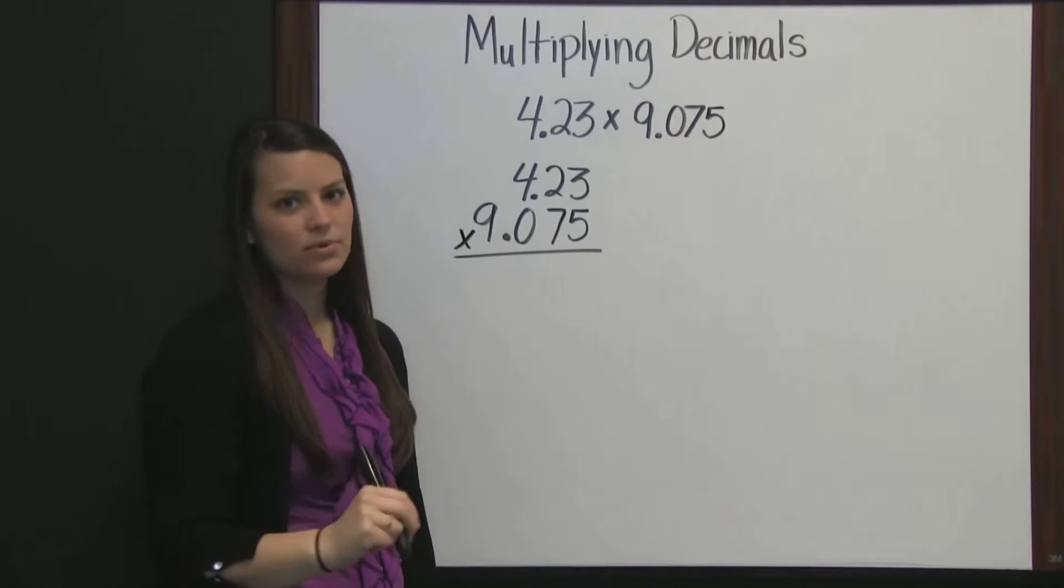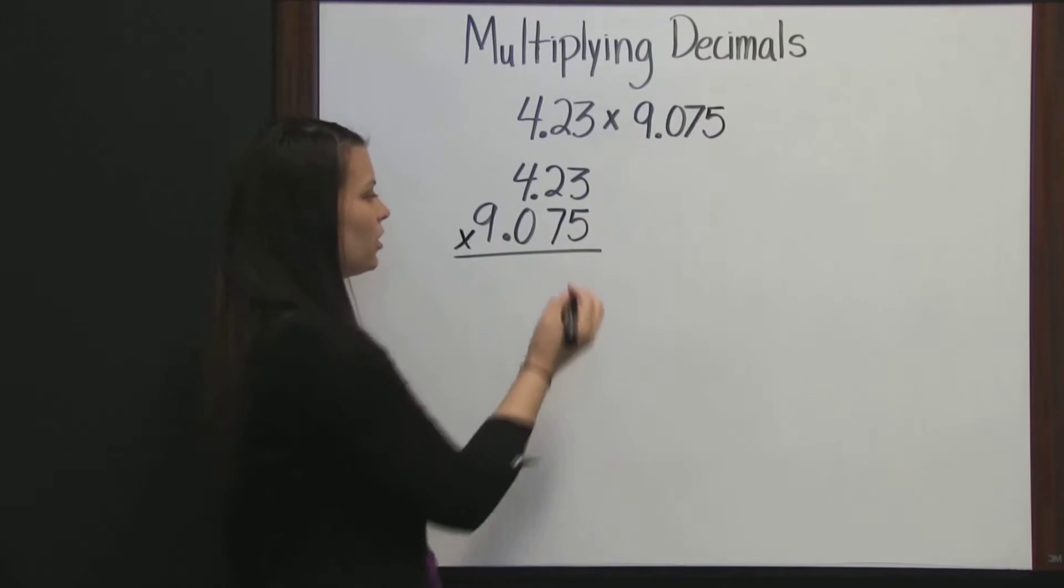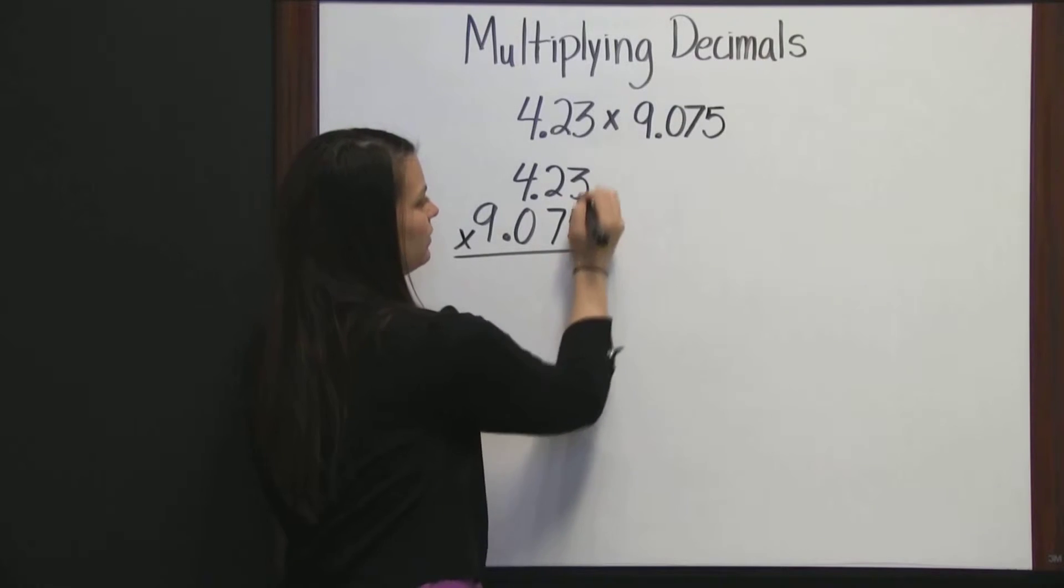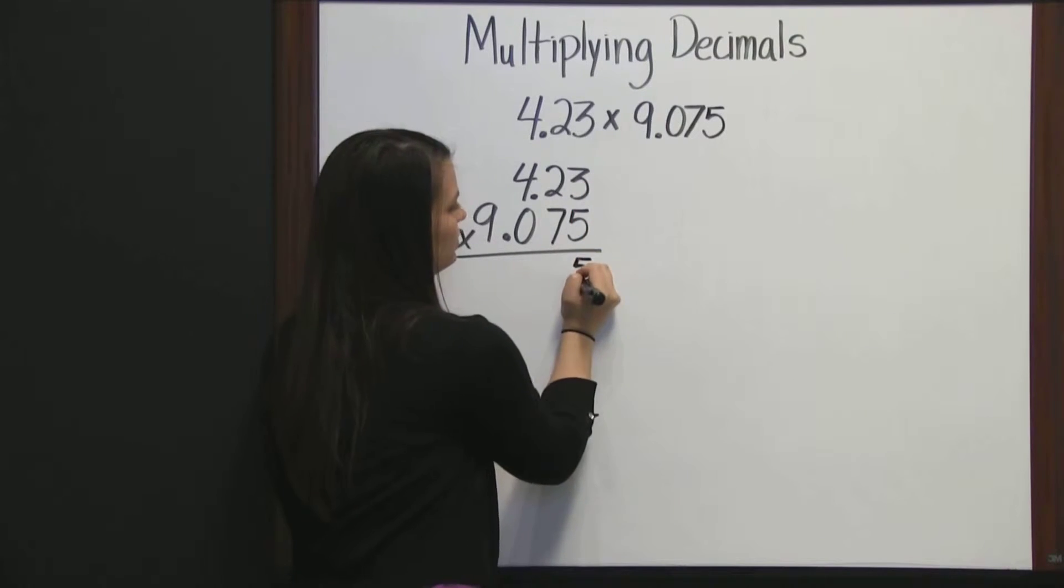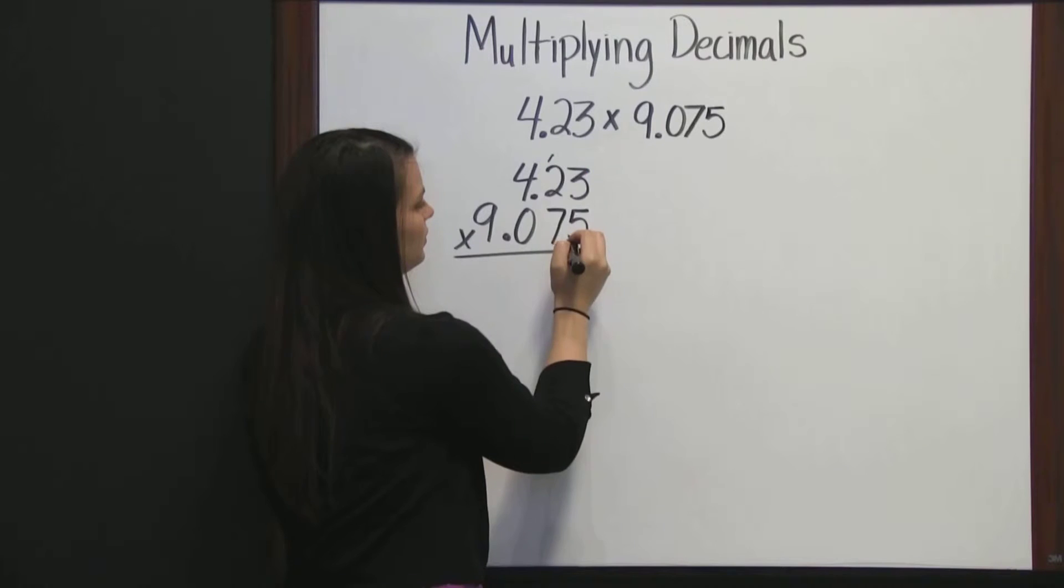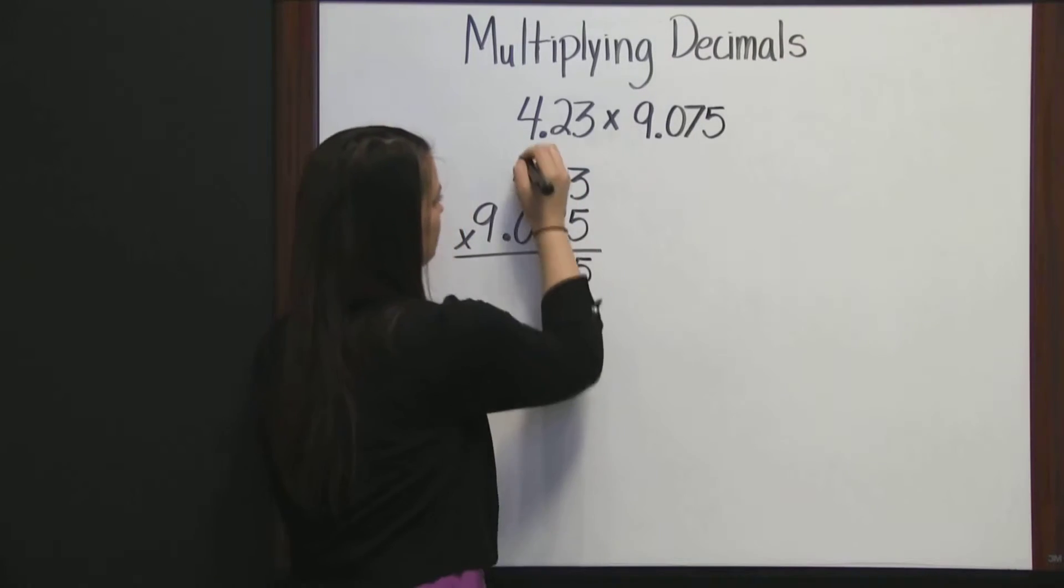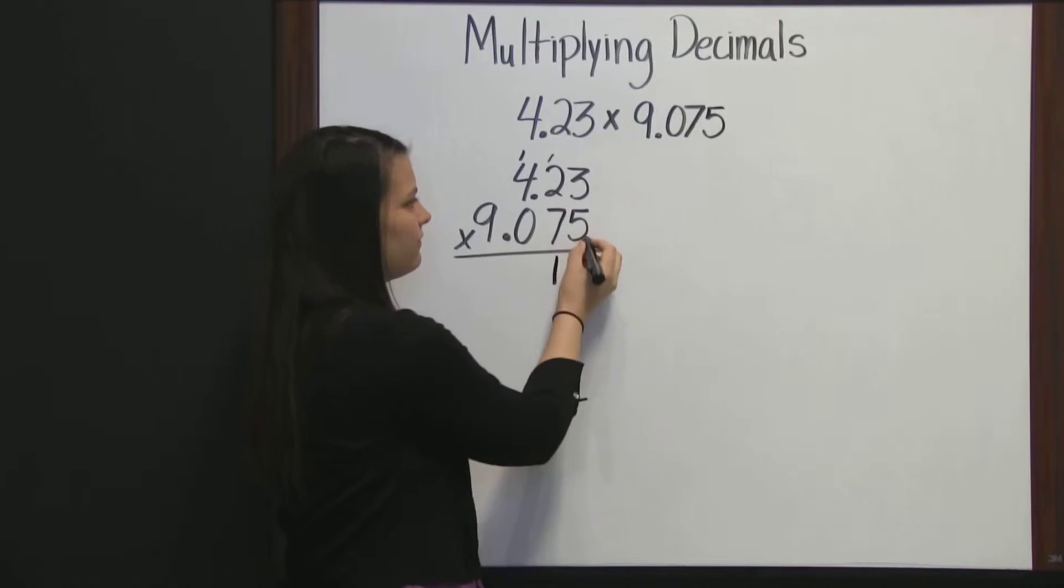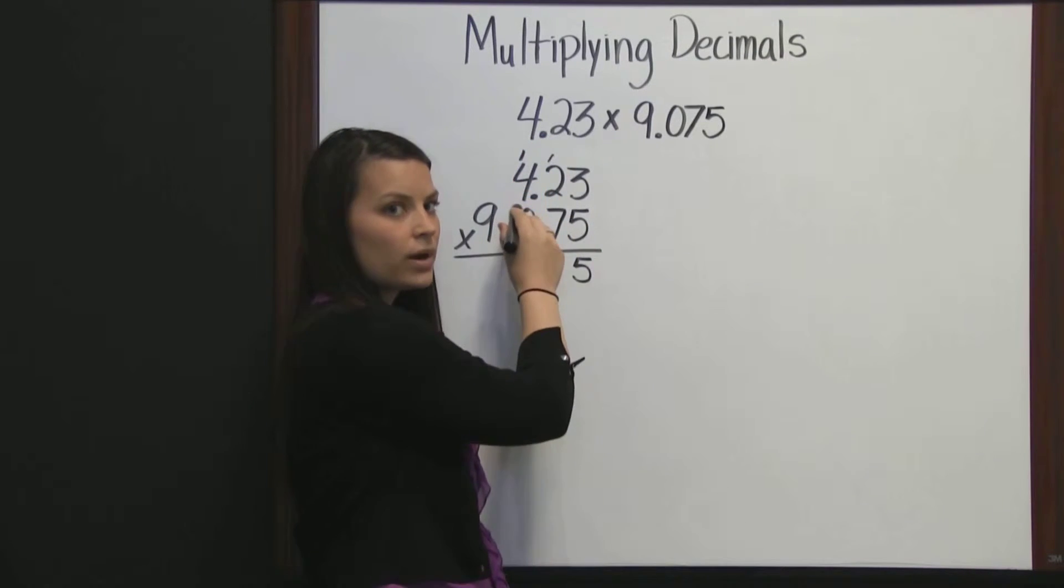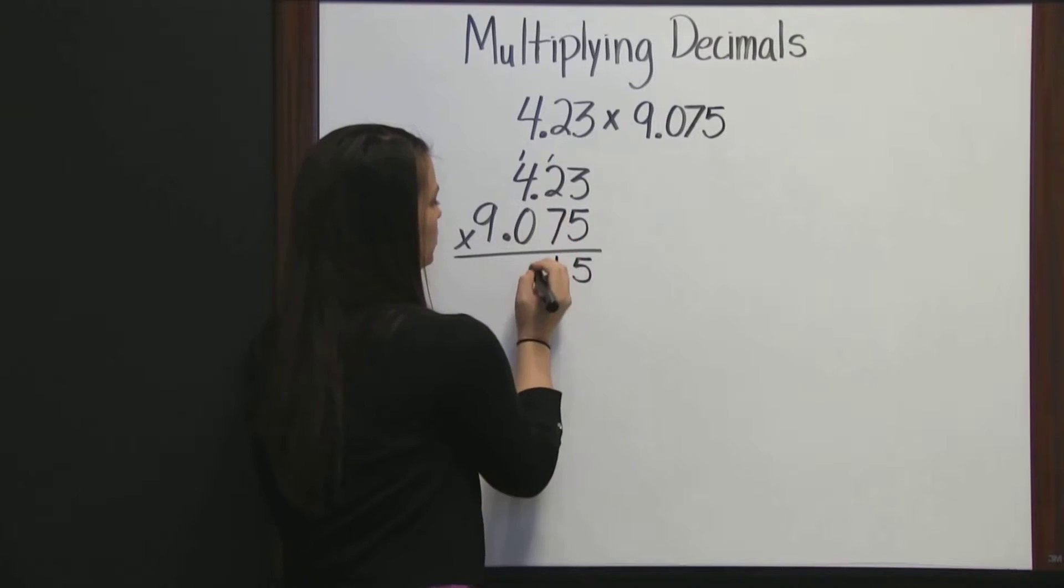Now, we multiply just like we multiply whole numbers. Starting with 5: 5 times 3 is 15, carry the 1. 5 times 2 is 10, plus 1 is 11, carry the 1. 5 times 4 is 20, plus 1 is 21.